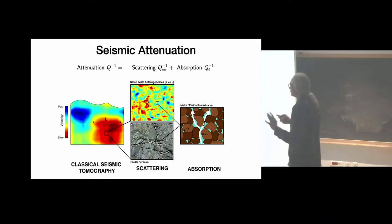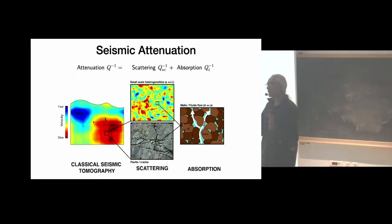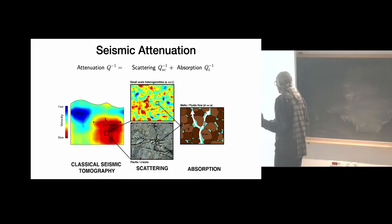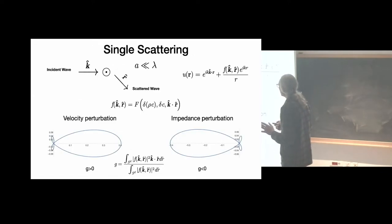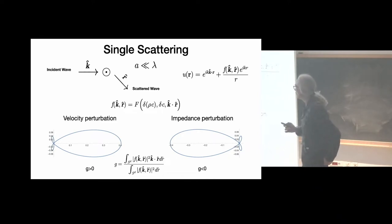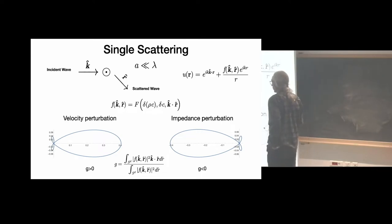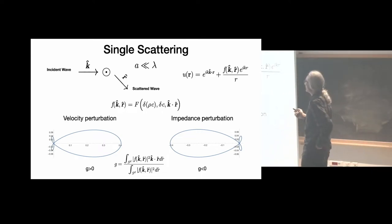This gives you motivation for why scattering and attenuation can be interesting for planetary science. There are also interesting questions about the Moon: the relation between deep seismicity and seismic attenuation, and the presence of volatiles at high depths. Now I will go to the more technical part of my talk, starting with some introductory ideas about scattering.